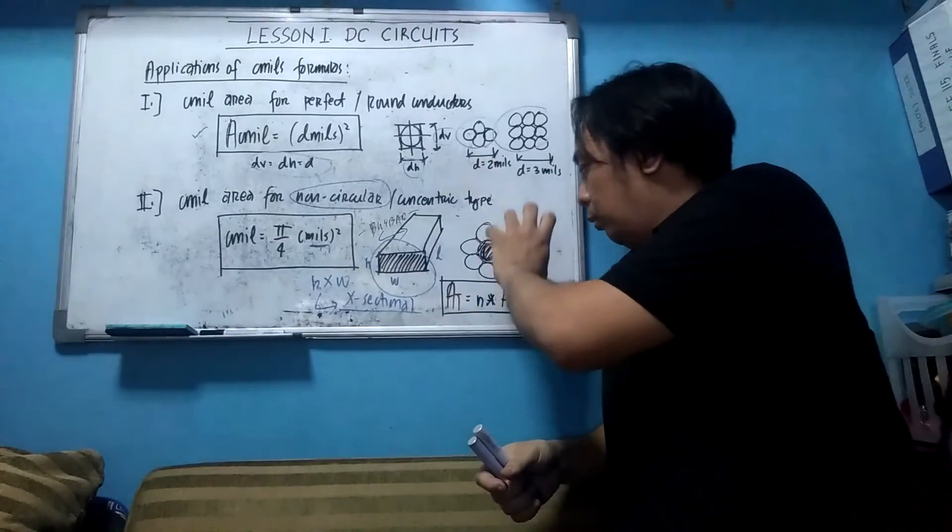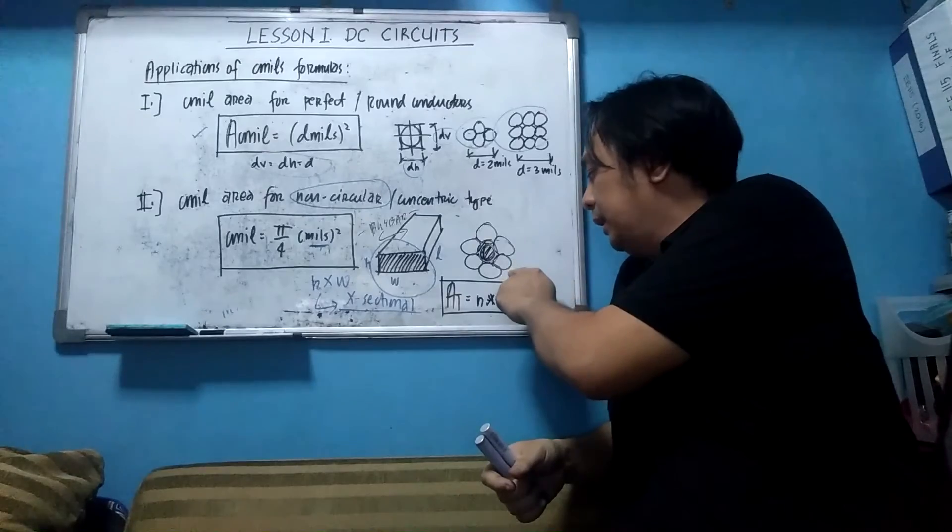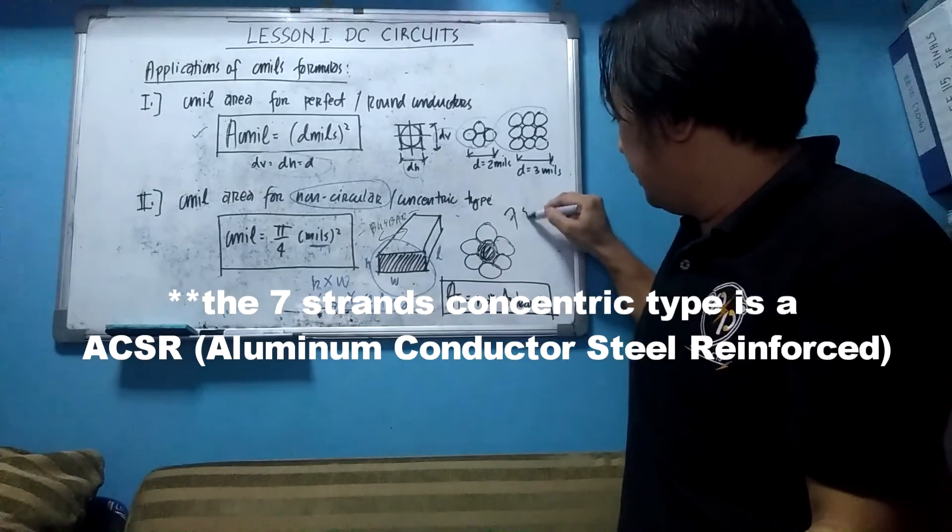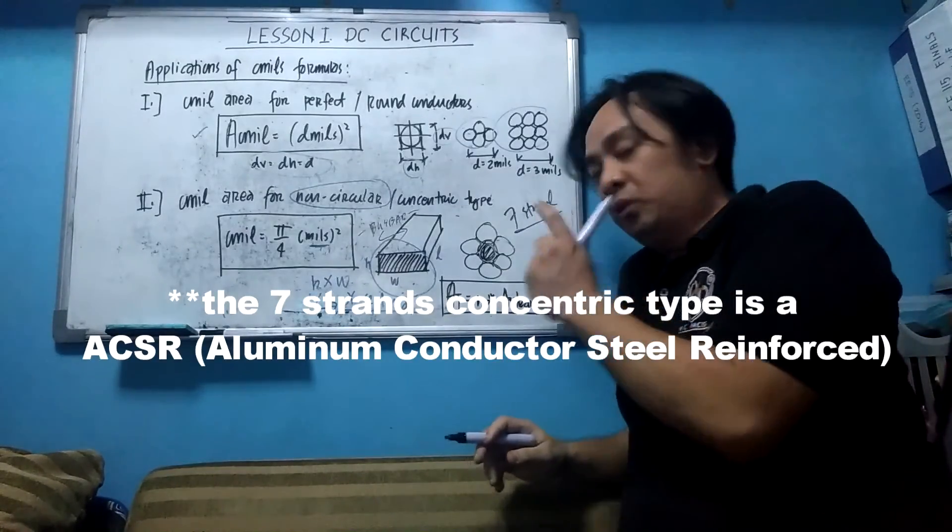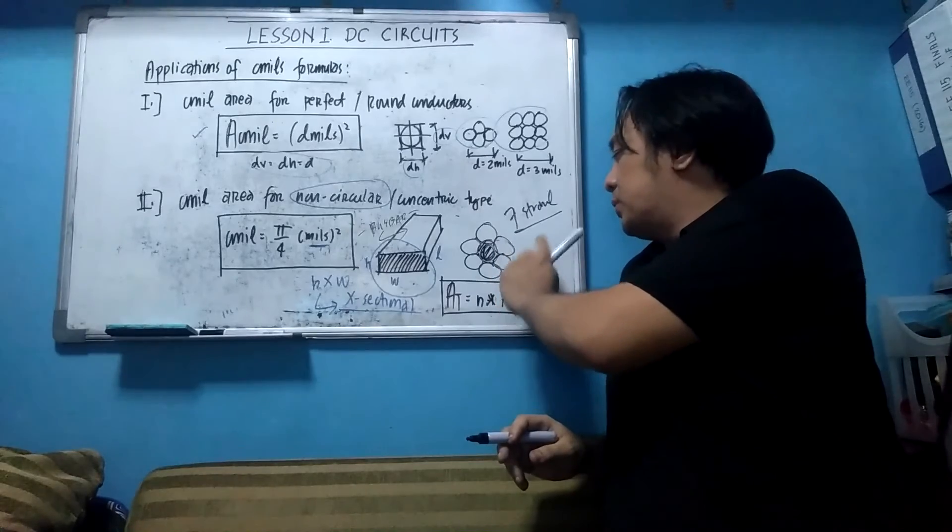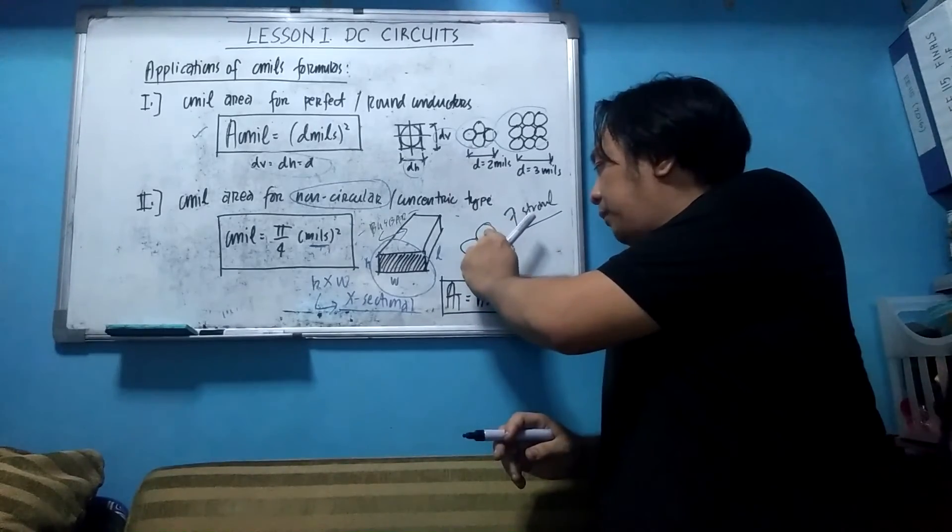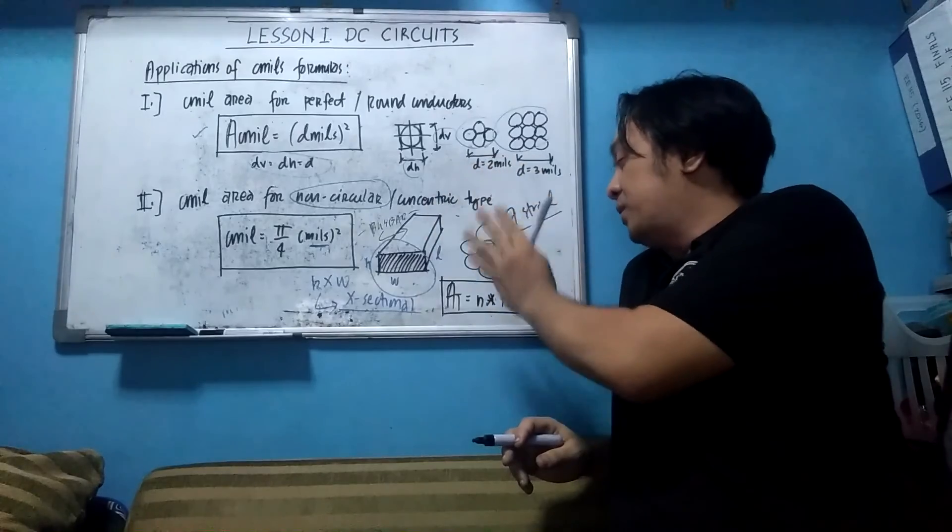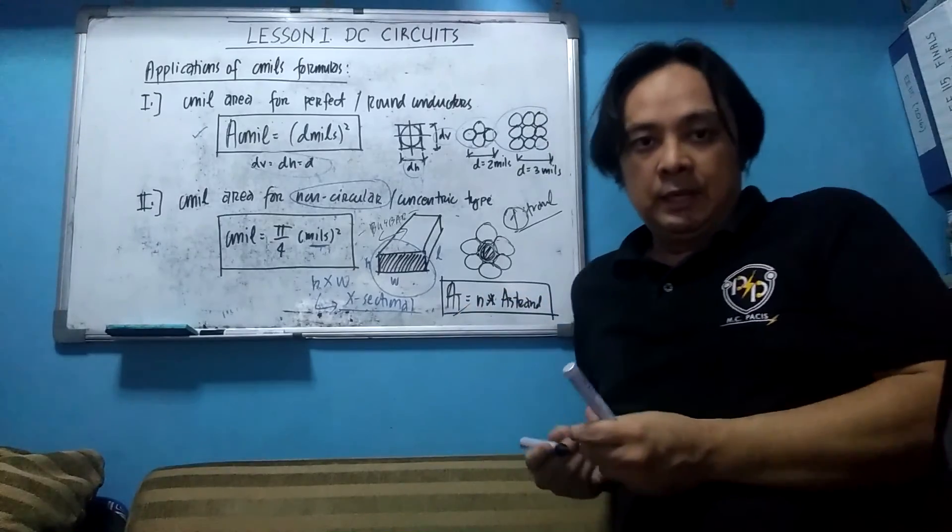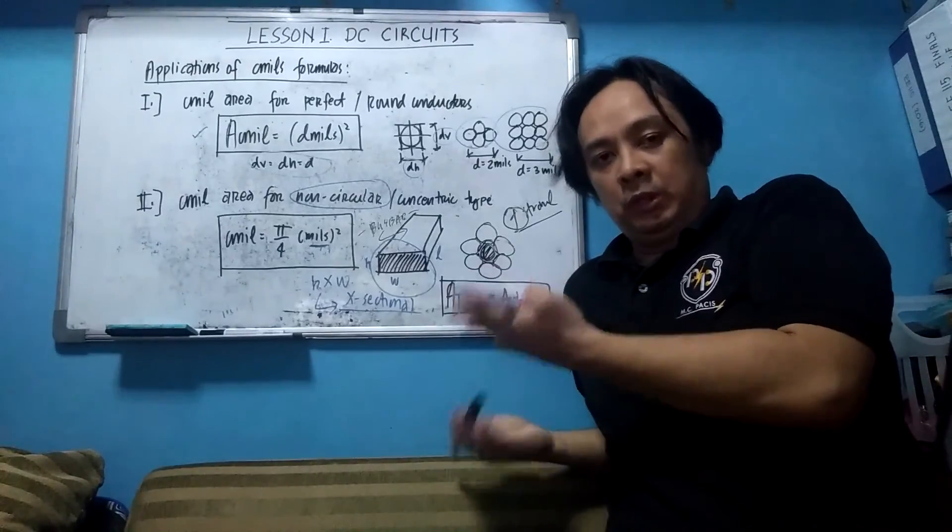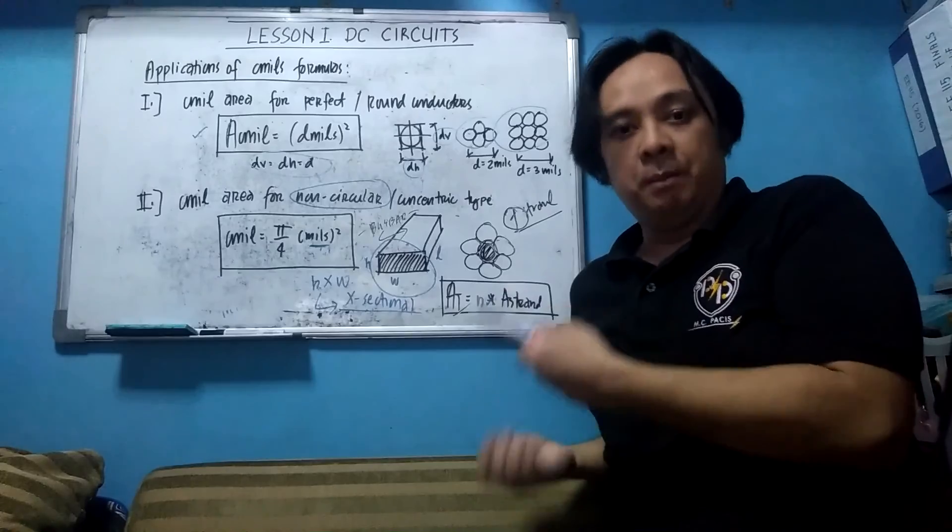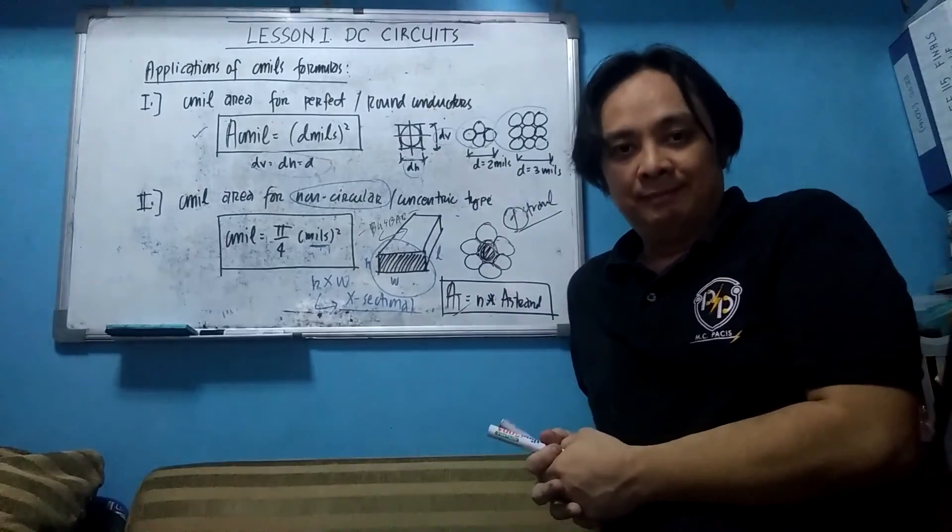Also, we can compute also the circular mill area of a concentric type or stranded type. This is a seven-strand conductor. So the technique here is you need to compute first since, again, they have the same area. So you need to compute first this strand area first, one strand area, and then you multiply it by seven, which is this, seven strands. And then you can now get the total area. So if you get the total area, then you get the resistance or error joint area total. Now we can solve some sample problems on the next slide. Thank you.